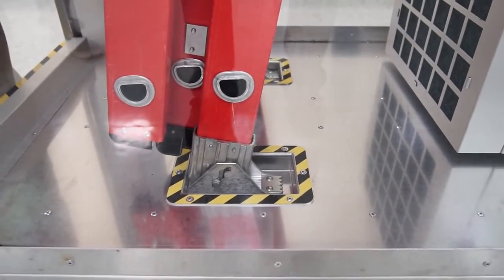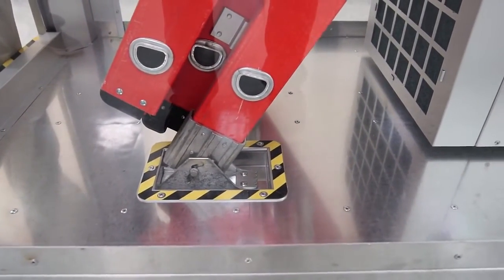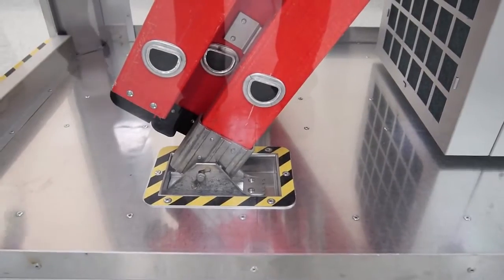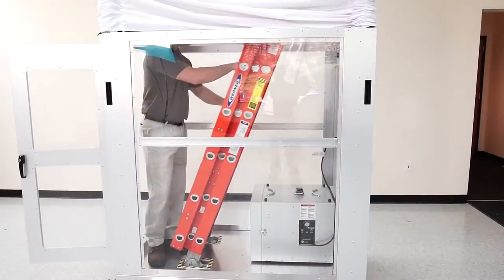Now that all the accessories are set up, let's put the ladder back into the unit. Set the ladder feet into the recessed pockets and lean the ladder against the back of the unit.